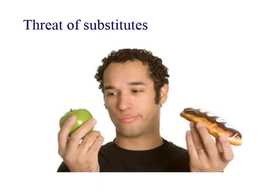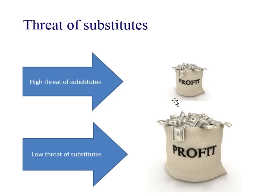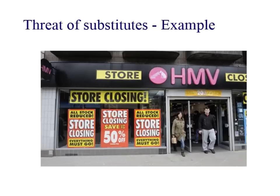Secondly, the threat of substitutes. To be completely correct, a substitute is a product that fulfils the same purpose. We've got here an apple and a chocolate eclair - they're actually different from each other, which is why this is industry analysis, not business analysis. One hairdresser compared to another hairdresser - those aren't substitutes, those are just competitors. But if you've got £50 to spend and you can spend it on getting your hair done, a substitute would be getting your nails done, or something else you could spend that money on. If there's a high threat of substitute products, profit tends to be smaller than if there's a low threat of substitutes.